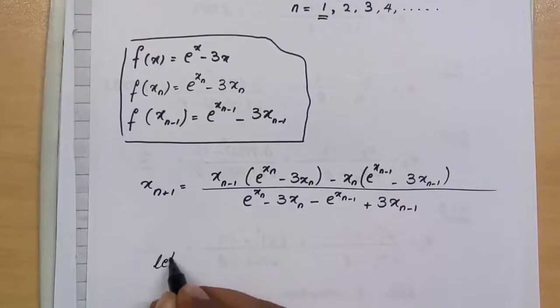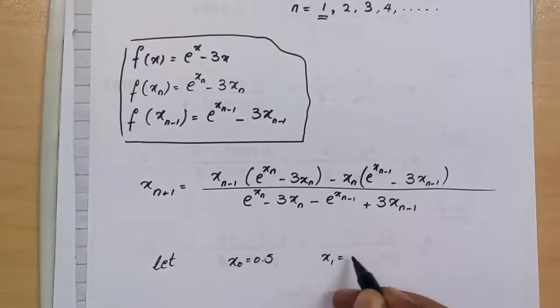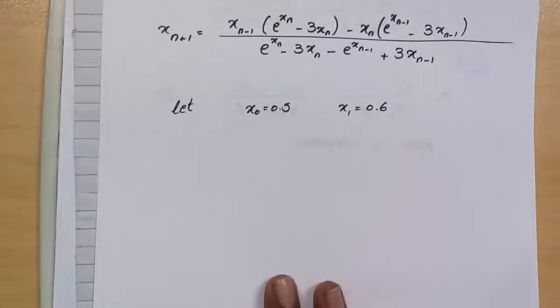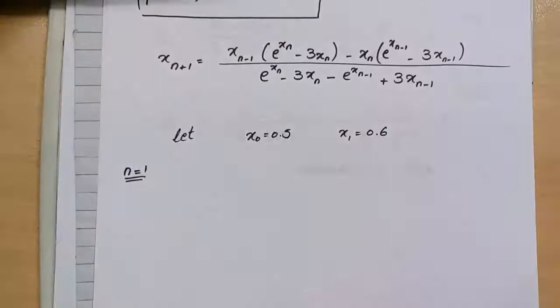Here we don't have the values of x, so we assume them. Keep the distance between two consecutive x values very short. You can pick values like 0.05 and 0.06, but such values would bother you in calculations.